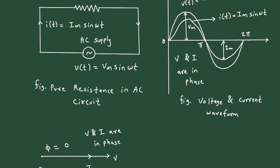To revise: in a pure resistance AC circuit, this is the resistance and this is the AC supply. The voltage is V(t) = Vm sin(ωt), where Vm is the maximum voltage, ω is the angular frequency in radians per second, and t is time in seconds. Im is the maximum current. The voltage and current waveform shows the amplitude of voltage is bigger than current, and both V and I are in phase.